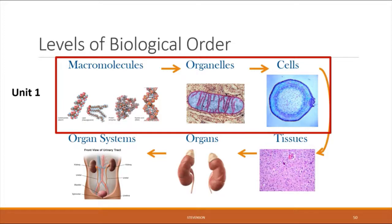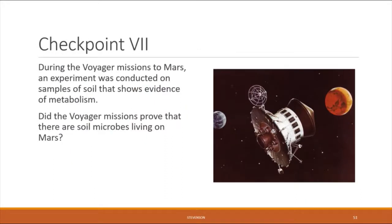Those are the eight properties shared by all living organisms. We'll round out the lecture with a final checkpoint. During the Voyager missions to Mars in the 1970s, an experiment on samples of Martian soil showed some evidence of metabolism — the soil appeared to be processing energy. Does that mean the Voyager missions proved there are soil microbes living on Mars? Why or why not? Once you've completed this checkpoint, you're finished with the first lecture. Congratulations, and I'll see you in the Chapter 2 lecture. Thank you.